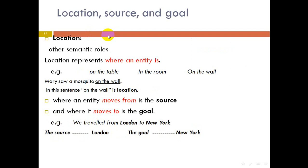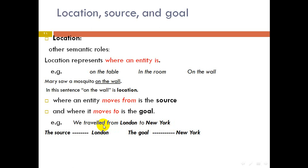Location, source, and goal are other semantic roles. Location represents where an entity is — like on the table, in the room, on the wall. In 'Mary saw a mosquito on the wall,' on the wall is the location. Where an entity moves from is the source; where it moves to is the goal. In 'We traveled from London to New York,' from London is the source and to New York is the goal.